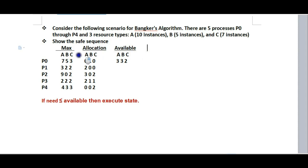First, let's understand the condition: if Need is less than or equal to Available, then we can execute that process in the safe sequence. To find the safe sequence, I need to calculate the Need for each process. Need equals Available minus Allocation.